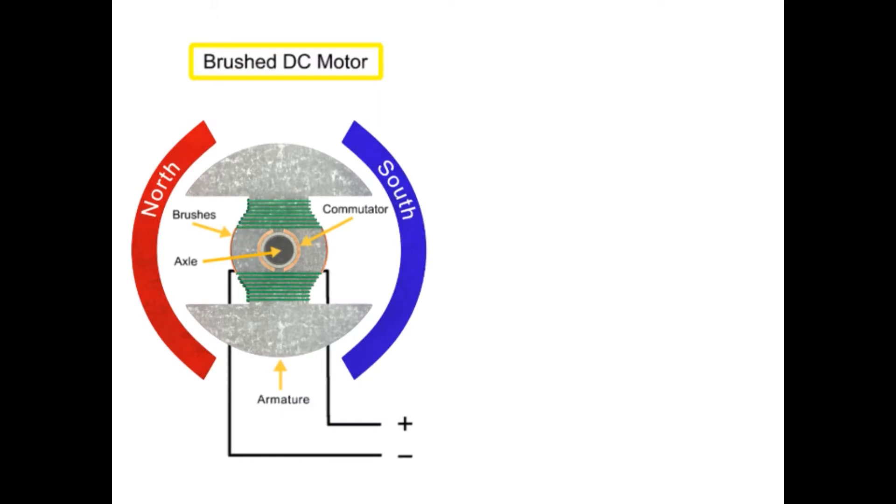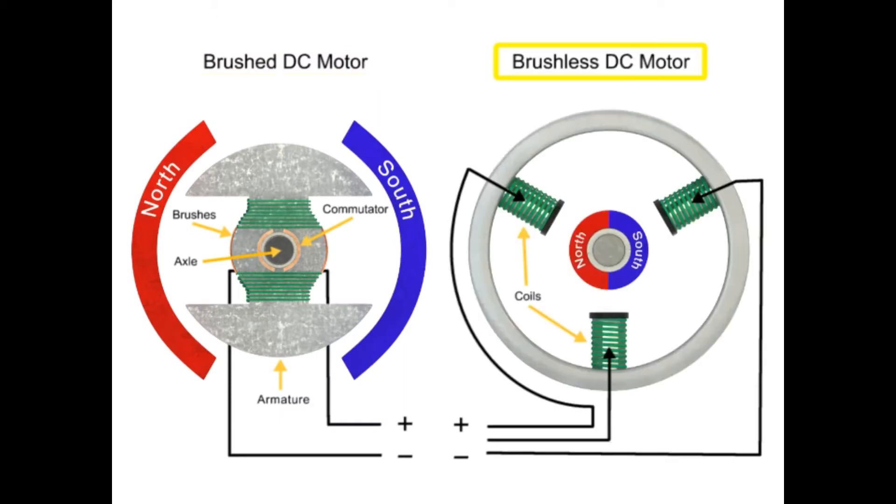Unlike DC brush motors, DC brushless motors do not utilize brushes to control current. Permanent magnets bonded directly to the rotor of the brushless DC motor create rotational motion as current passes through the stator.